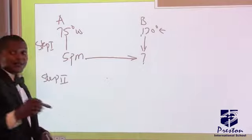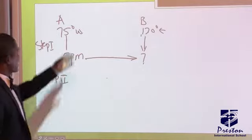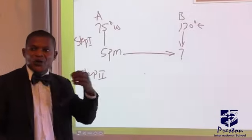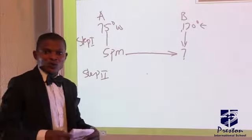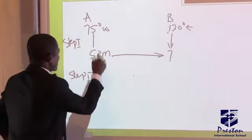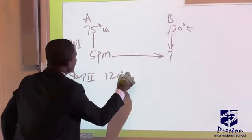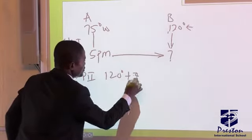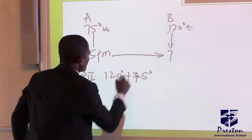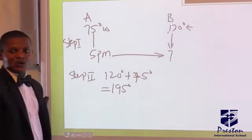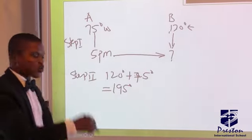In step two, you calculate the longitude differences. Since they are in different directions, we are going to add. If they are in the same direction, we subtract. We have 120 degrees plus 75 degrees, which gives us 195 degrees. That is step two.